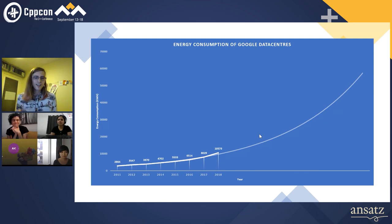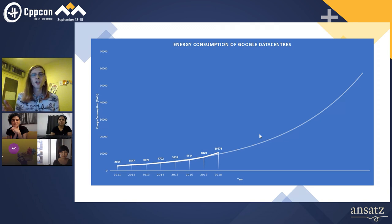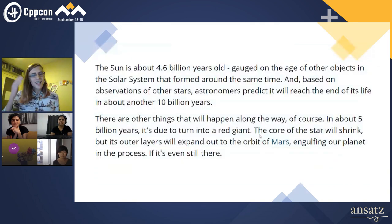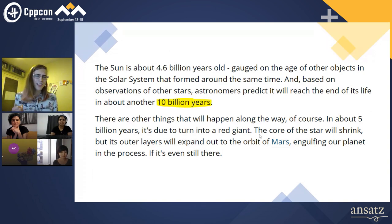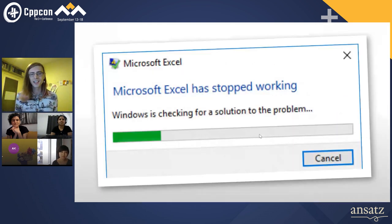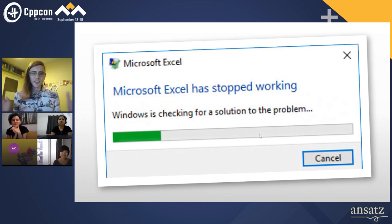We should also be thinking about sustainability — maybe we want to extrapolate these numbers out 10 years, or maybe 100 years, or maybe until the end of time. This news article says the sun might explode in about 10 billion years, and the earth will be consumed in about 5 billion years. So I tried to extrapolate all this data out to 5 billion years, and Excel crashed, which is not what I wanted. We're probably not going to last that long anyway.